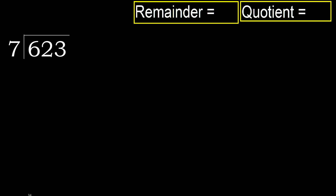623 divided by 7. 6 is less, therefore next. 62 is not less, therefore with 62. 7 multiplied by which number is nearest to 62 but not greater?